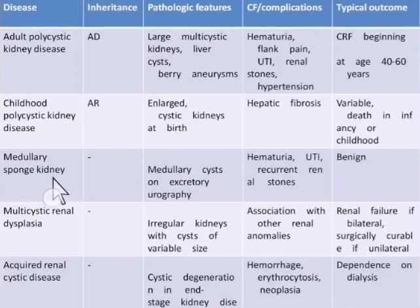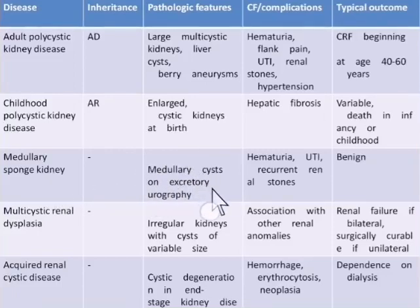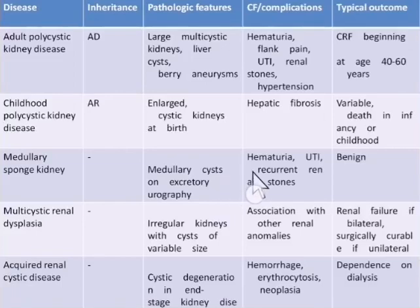Number three is medullary sponge kidney. As the name implies, the cysts occupy the medullary part of the kidneys. Diagnosis is by excretory urography. The presentation includes hematuria, UTI, and recurrent renal stones. It usually follows a benign course.